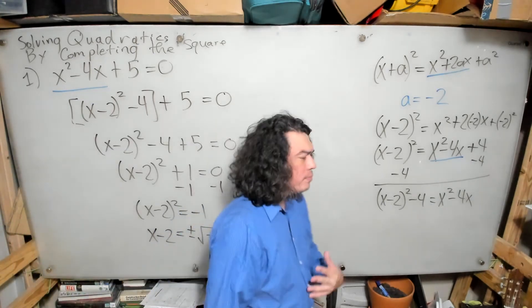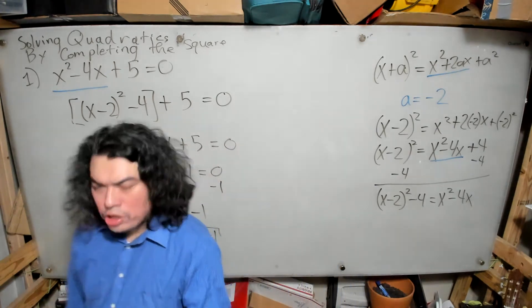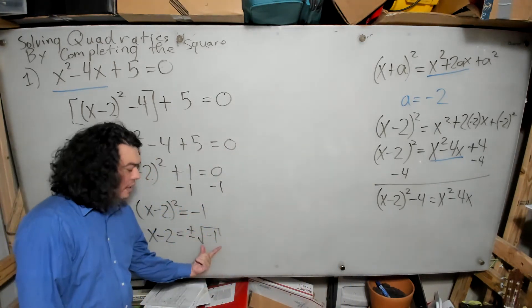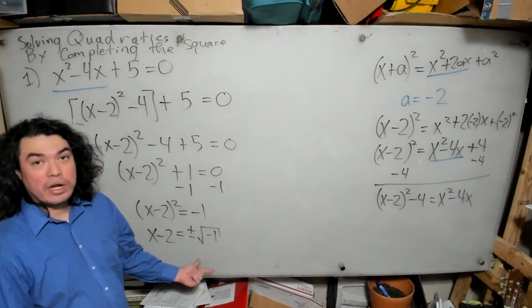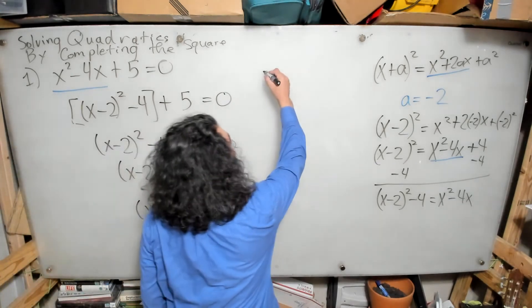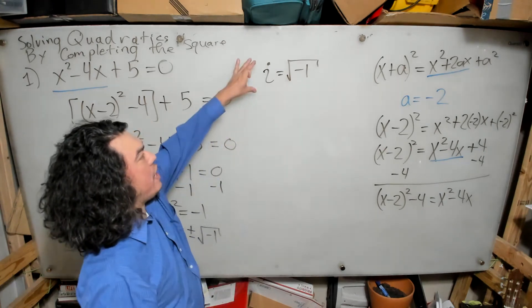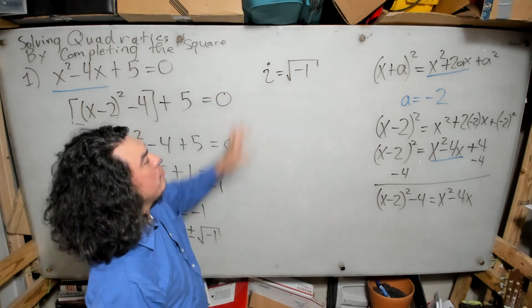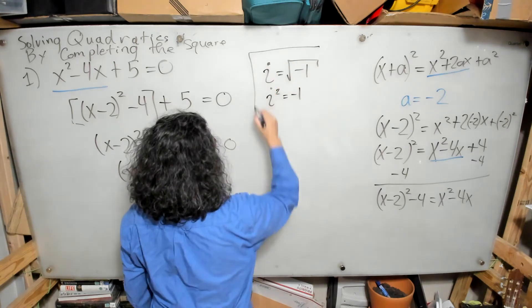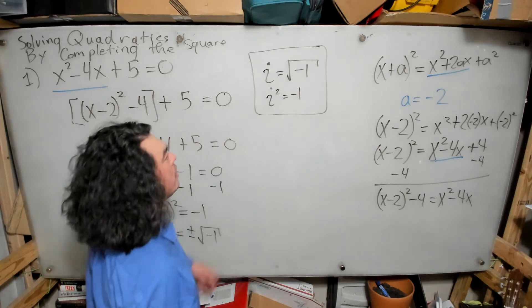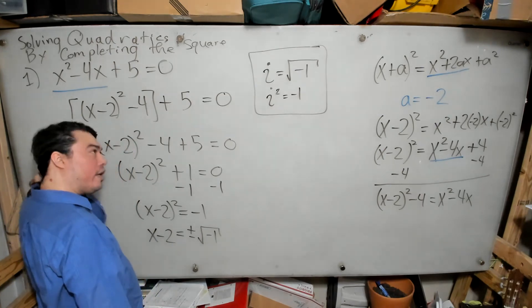Before proceeding, I want to address two topics. First: what is the square root of negative 1? We have a special name for it. i is defined as the square root of negative 1, and equivalently i squared equals negative 1. This is called the imaginary number i, and it allows us to write the right-hand side as plus or minus i.